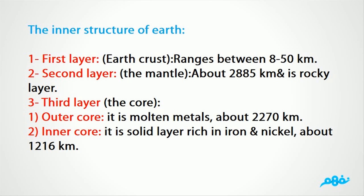The 3rd layer is the core, which has two parts: 1. The outer core, which is molten metals, about 2,270 km. 2. The inner core, which is a solid layer rich in iron and nickel, about 12–16 km.